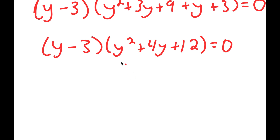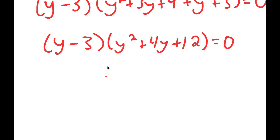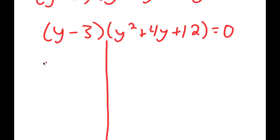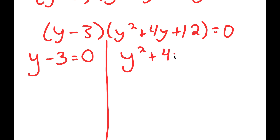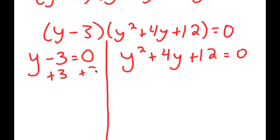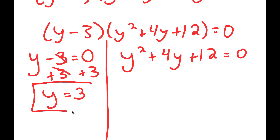Now this gives me two equations. I get y minus 3 is equal to 0, and I also get y squared plus 4y plus 12 is equal to 0. For my first equation, y minus 3 equals 0, all I have to do is add 3 on both sides, and I get y equals 3. So this is my first solution of y.